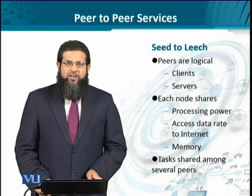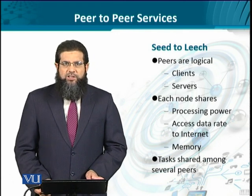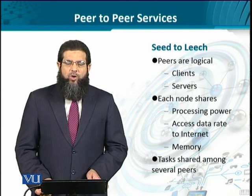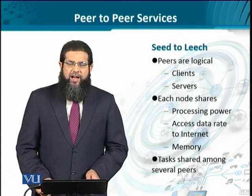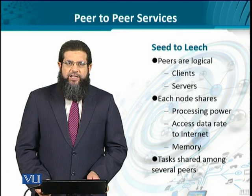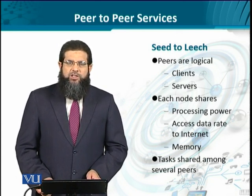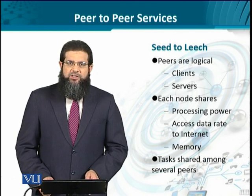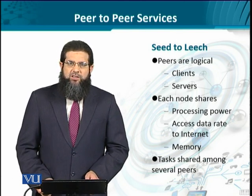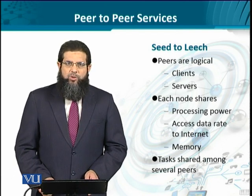When it comes to offering services, each node that enters the network offers its processing power — that is the CPU cycles — the data rate it can offer on the internet, and the hard disk it can share with other users. This is what a certain node can seed into the network. When such resources are pooled together, different tasks can be shared between these peers, and any service required by a certain peer can be taken out of the network. This process is known as leeching.